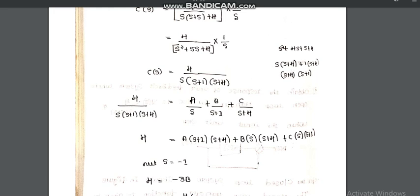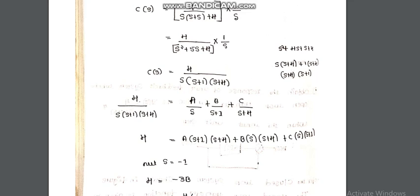To simplify using partial fractions: 4 / [s(s+1)(s+4)] = A/s + B/(s+1) + C/(s+4). Taking LCM: 4 = A(s+1)(s+4) + B·s(s+4) + C·s(s+1).